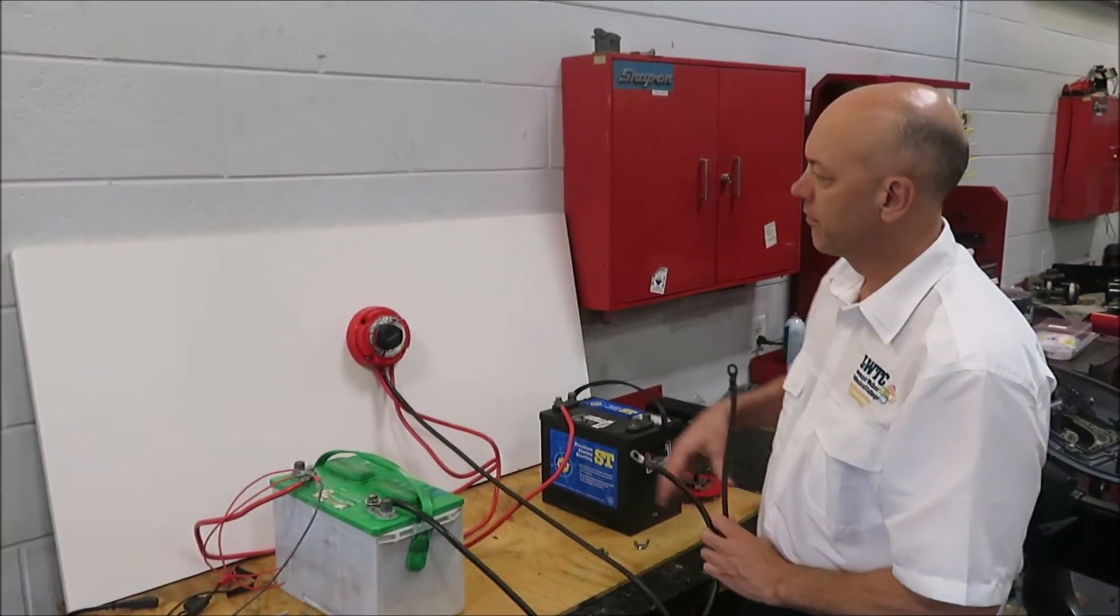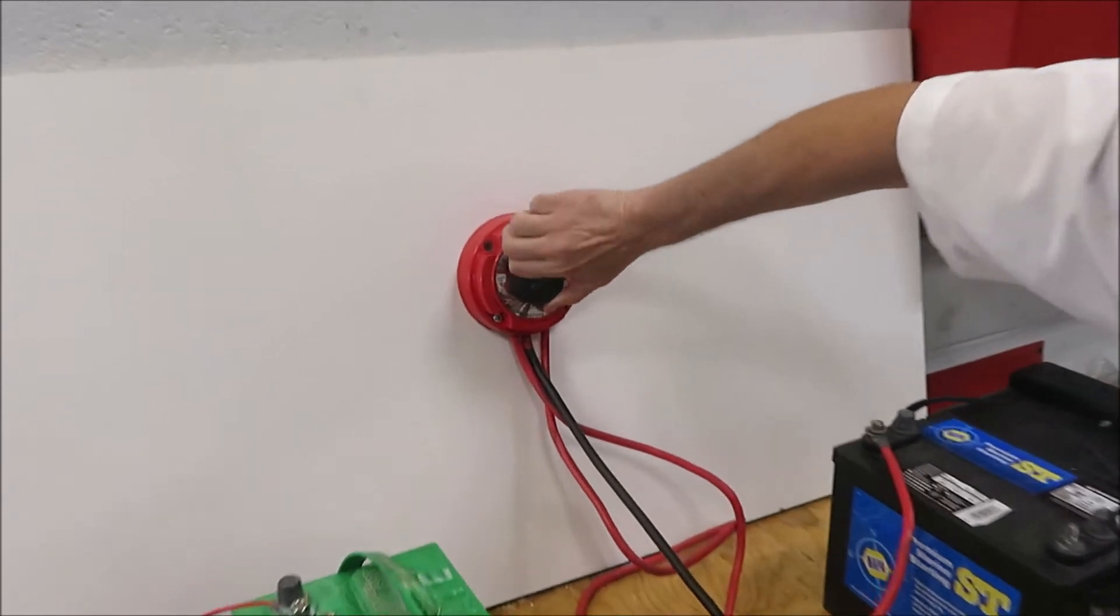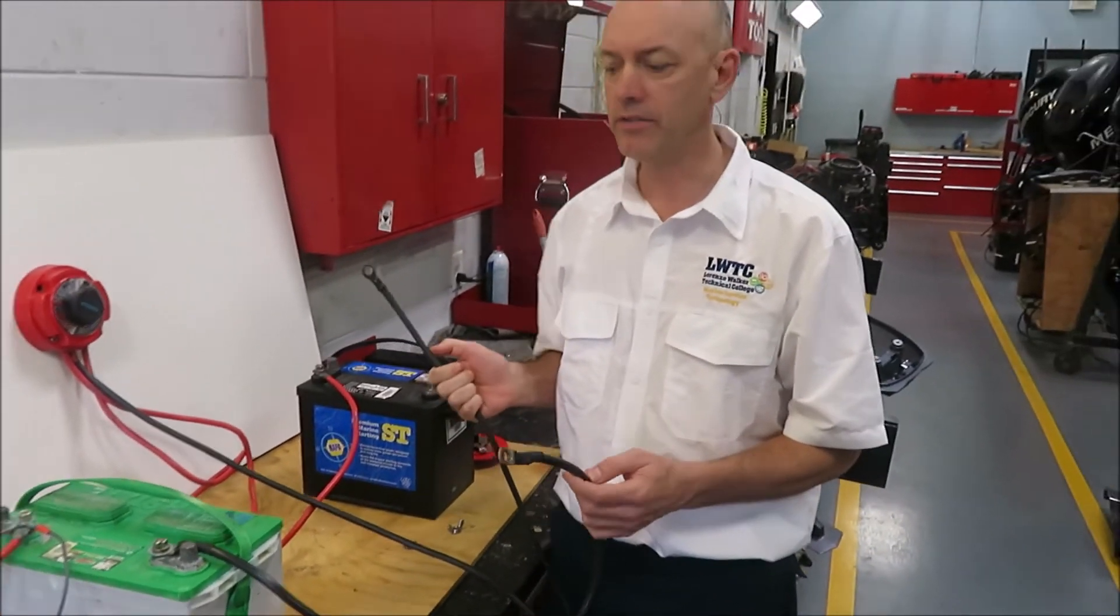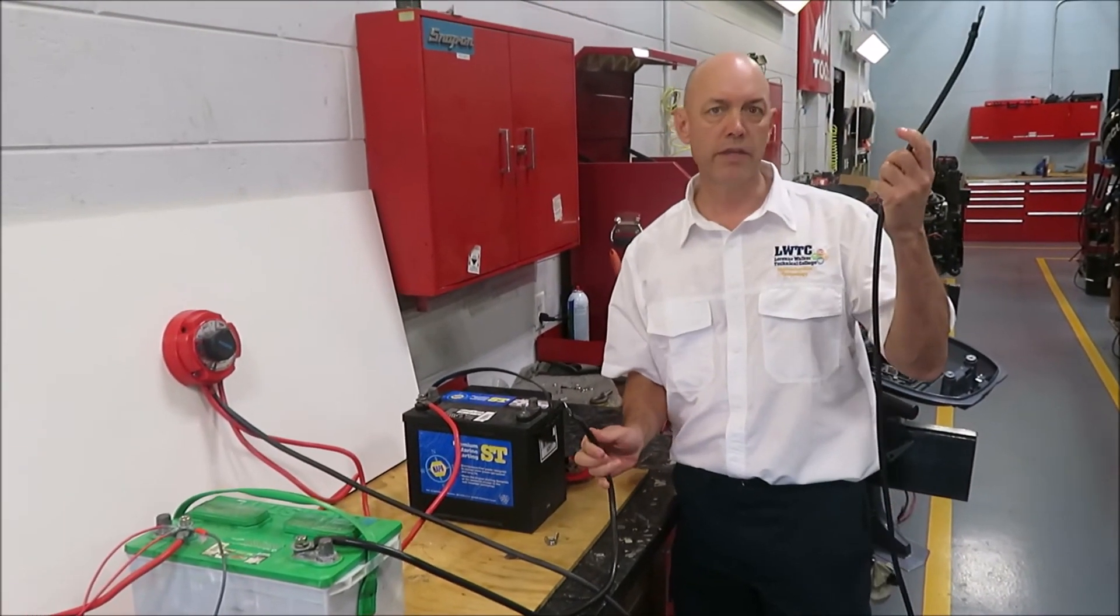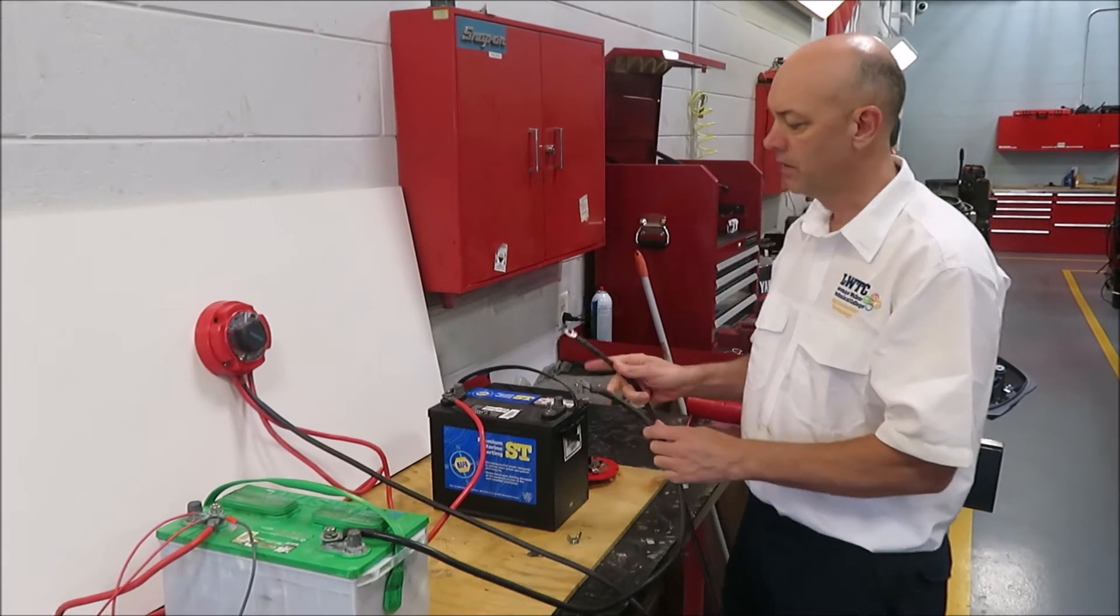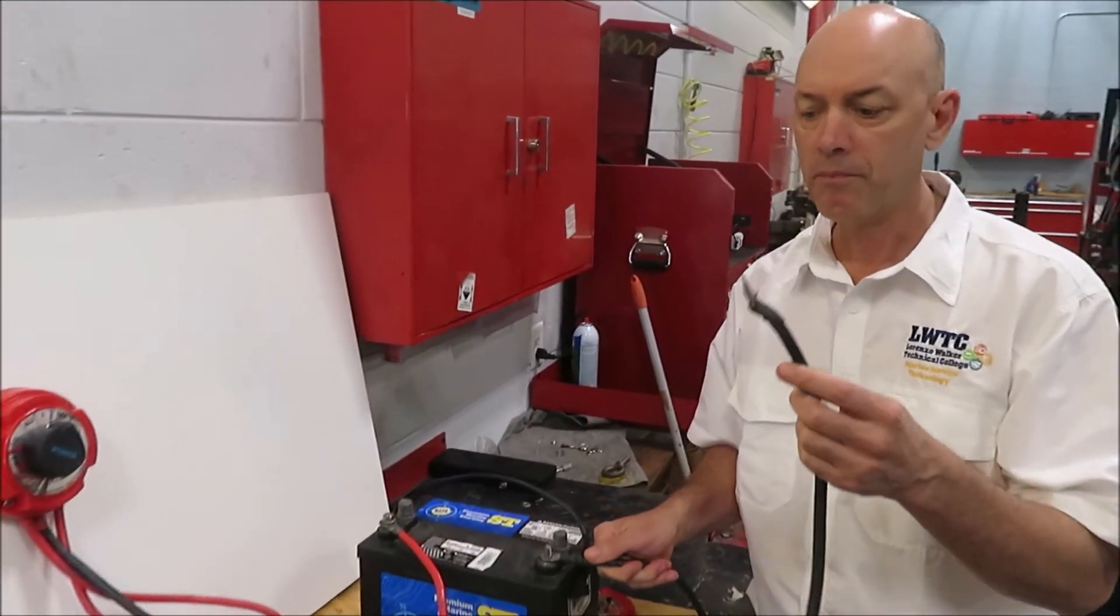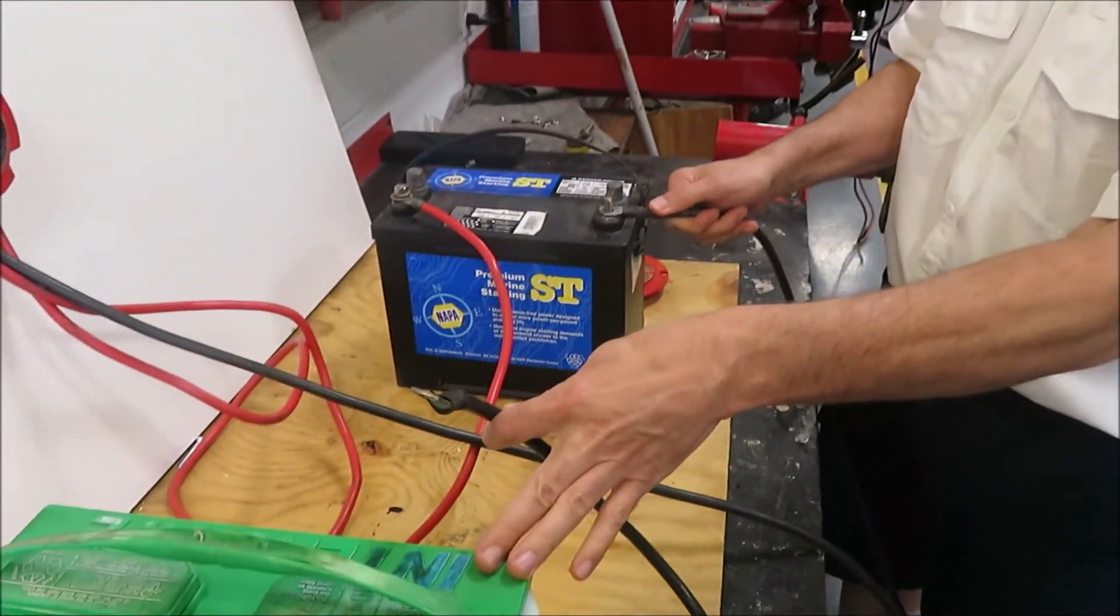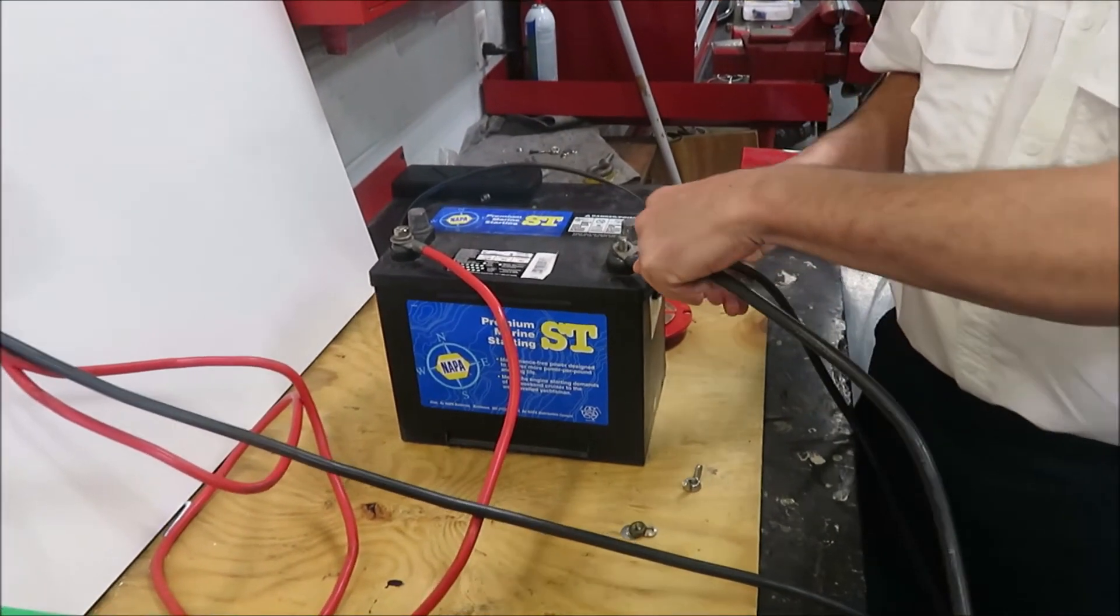So you've got your three positive terminals coming into the battery switch. Now it's time to connect your negative leads. You've got your negative lead coming from your engine, going to go to your starting battery. Then you're going to hook up the negative wire from your house battery to your starting battery.